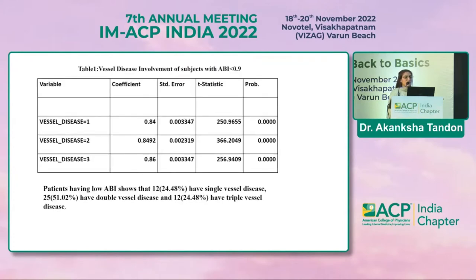Patients with low ABI showed that 24.48% had single vessel disease, 51% had double vessel disease, and 24.48% had triple vessel disease. Taking ABI as a dependent factor and vessel disease — single, double, and triple — as the independent variable, inferential statistics were computed. The coefficient value in single vessel disease was 0.84, and as we move from single to triple vessel disease, the coefficient value increases, with a p-value of less than 0.05, which is statistically significant.